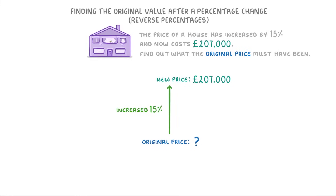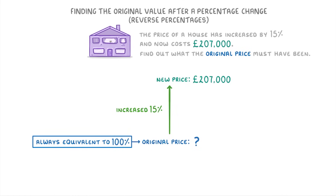The best way to think about these questions is to remember that the original price is always equivalent to 100%. So in this example, where the price is increased by 15%, the new price is effectively 115%, because we can think of it as the original 100% plus the extra 15%, which is 115% in total.